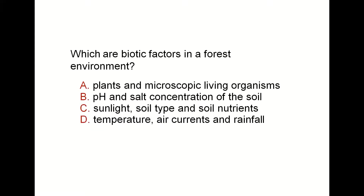Next: which are biotic factors in an environment? There are two types of factors: biotic and abiotic. Biotic factors are all living things — plants, animals, humans, and microorganisms. Abiotic factors are what biotic factors need to live, such as water, air, the right temperature, and soil. So biotic factors include plants and microscopic living organisms, while the other answer choices include only abiotic factors.